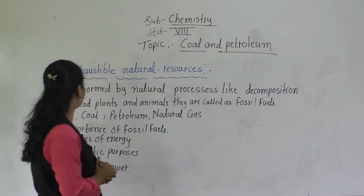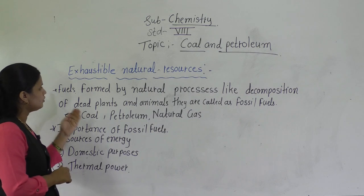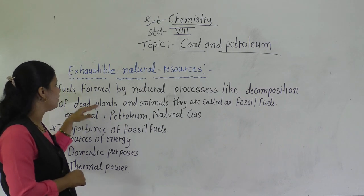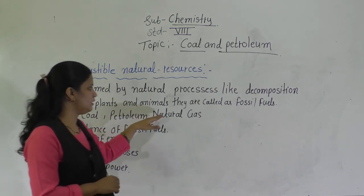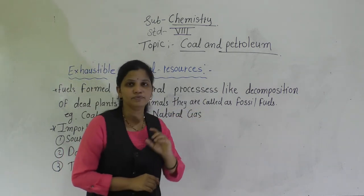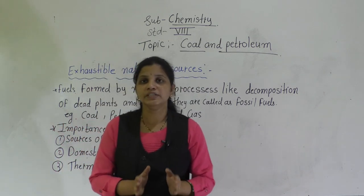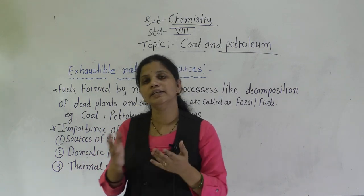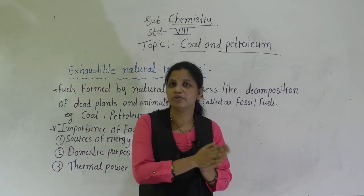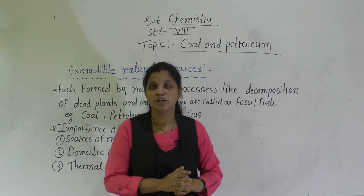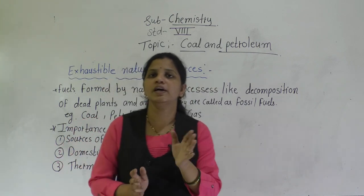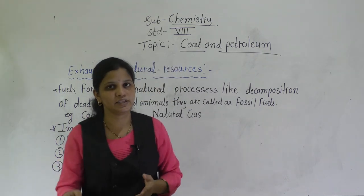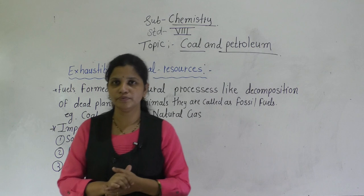Fuels formed by the natural processes like the decomposition of dead plants and animals are called fossil fuels. Coal, petroleum, and natural gas are examples of exhaustible natural resources, and together they are known as fossil fuels.